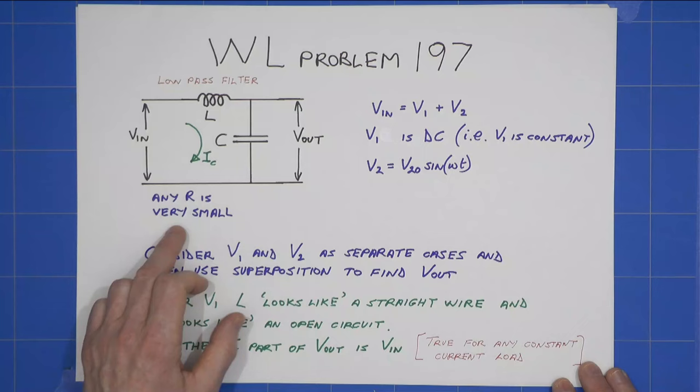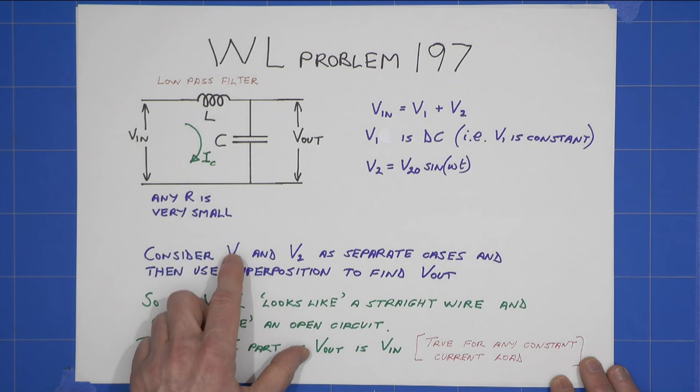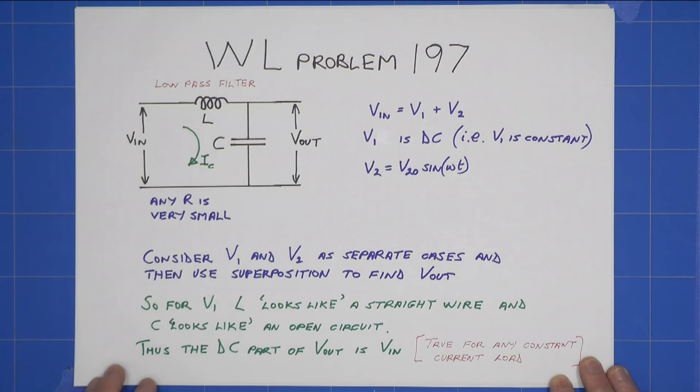And we're told R is very small, the ohmic resistance. We're going to consider V1, the DC component, and V2, the sinusoidal component, as separate cases, and then use superposition to find out Vout.